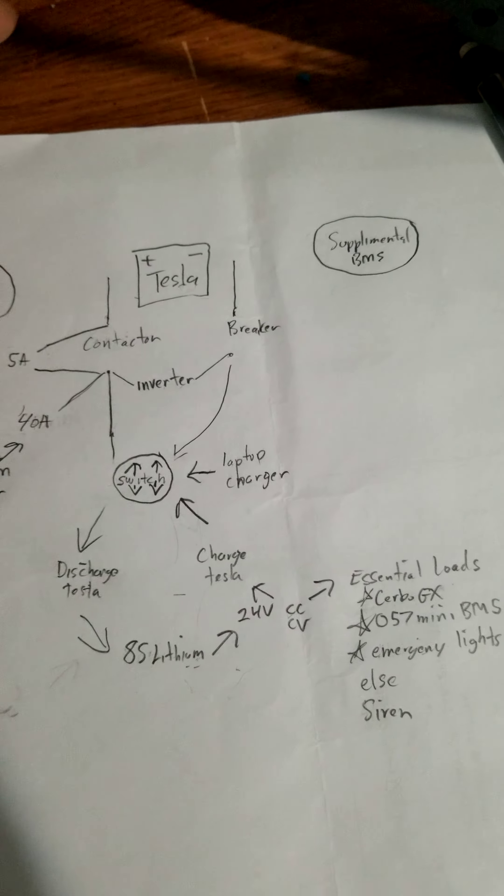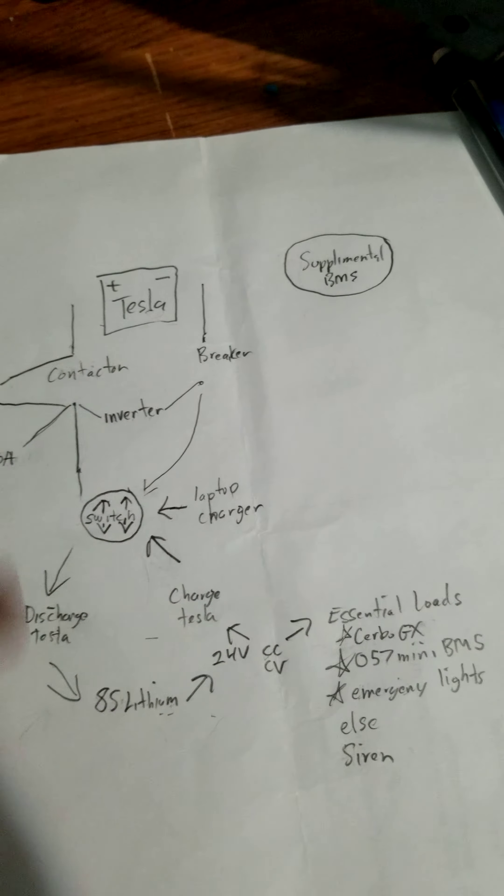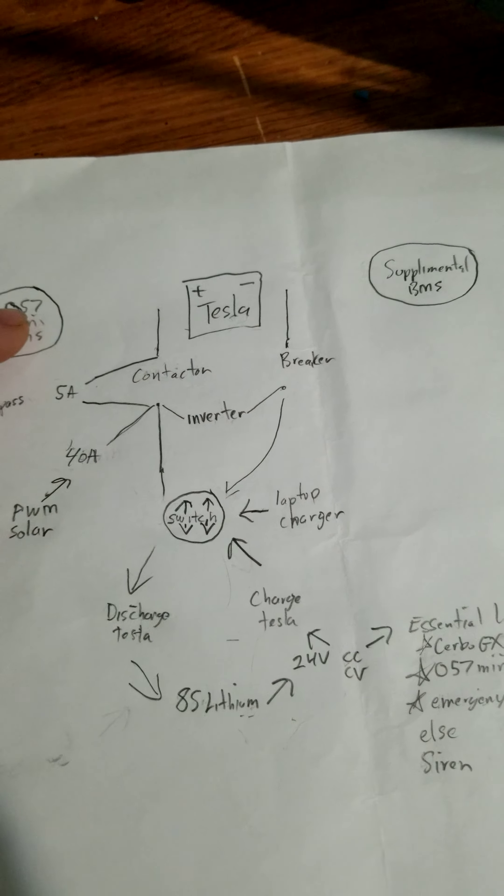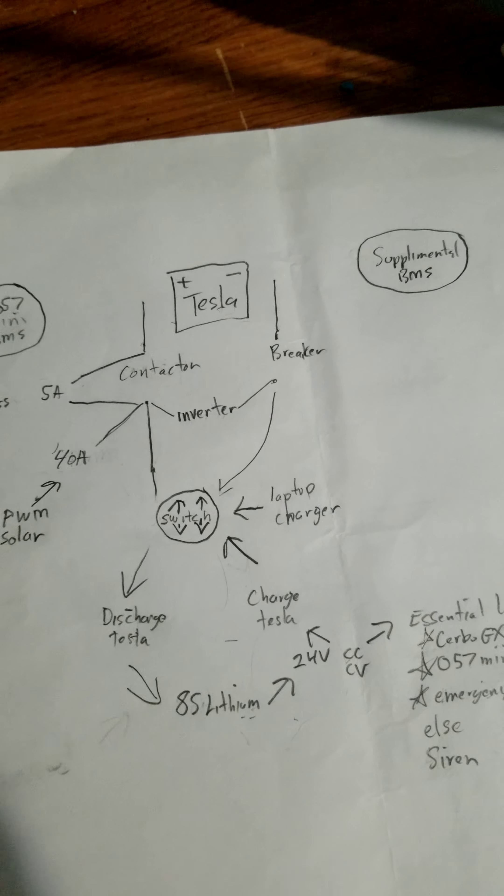As one cell drops low auto balance turn itself back on and it'll loop like that essentially forever until all the cells are perfectly balanced and below the turn on threshold again.